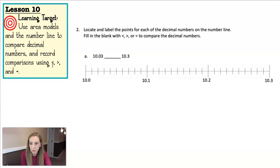Lesson 10 says use area models and the number line to compare decimals and record comparisons using greater than, less than, and equal to. So this is the same idea, just using different models to show or to compare. So $10.03. This is $10.10 and 20 cents and 30 cents. So if that helps you think about it, $10.03. Here's 10 cents. So 1, 2, 3. And $10.30. There's a way over here. So then it's easy to see.